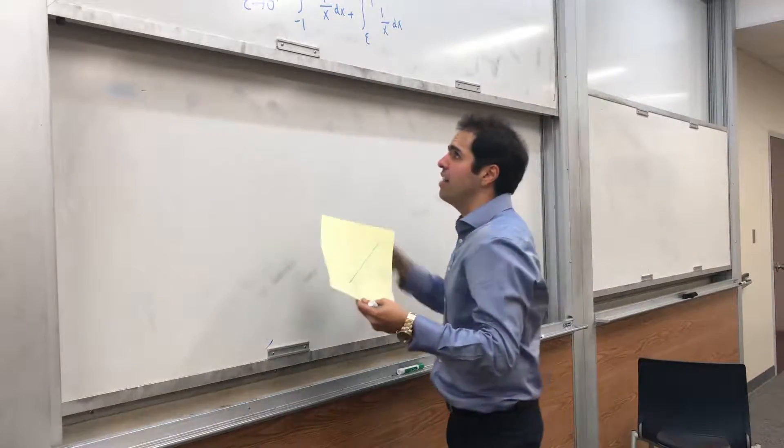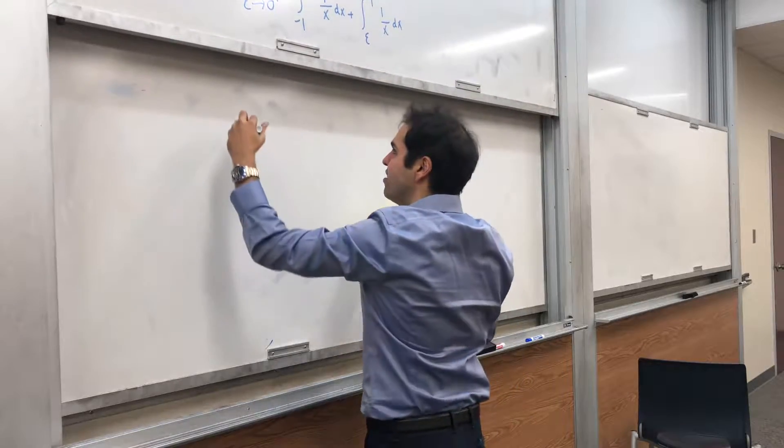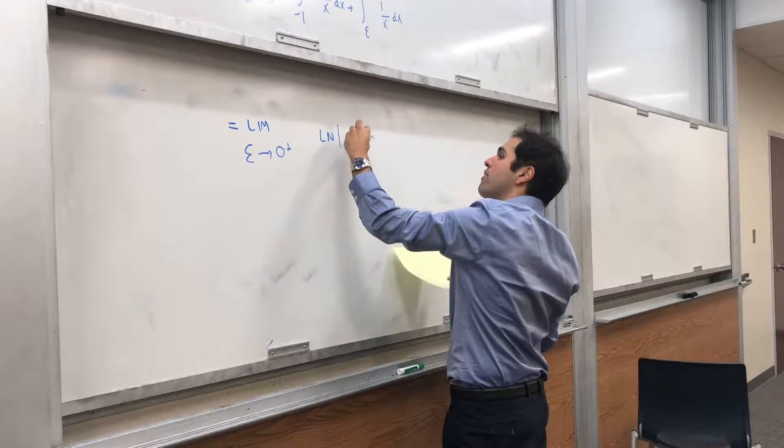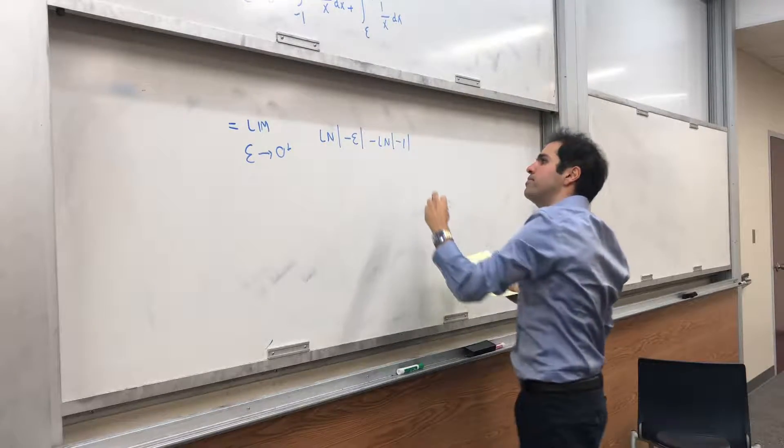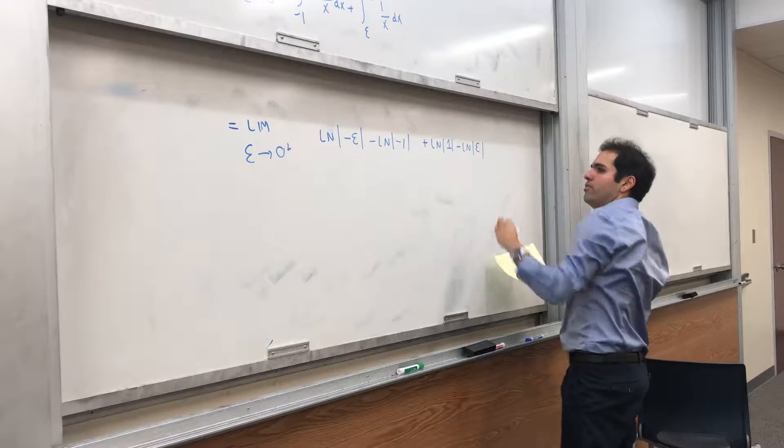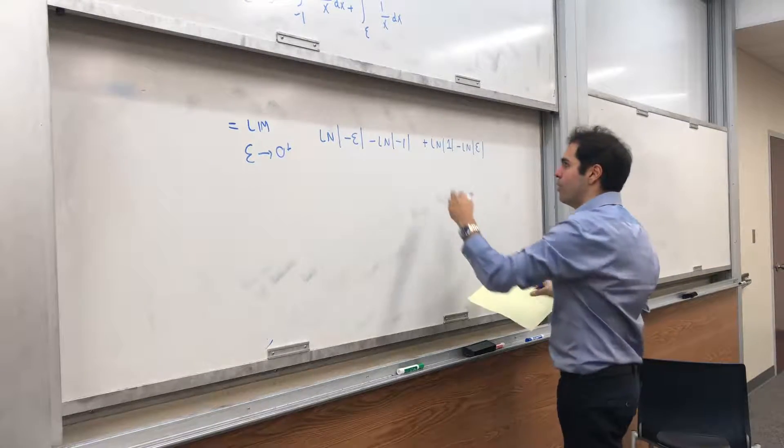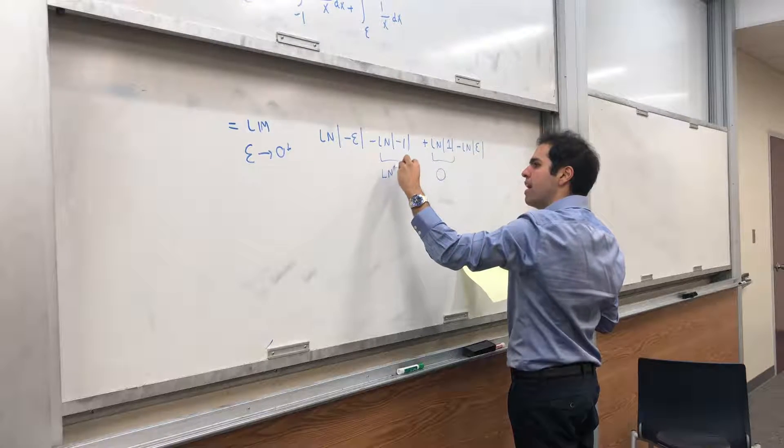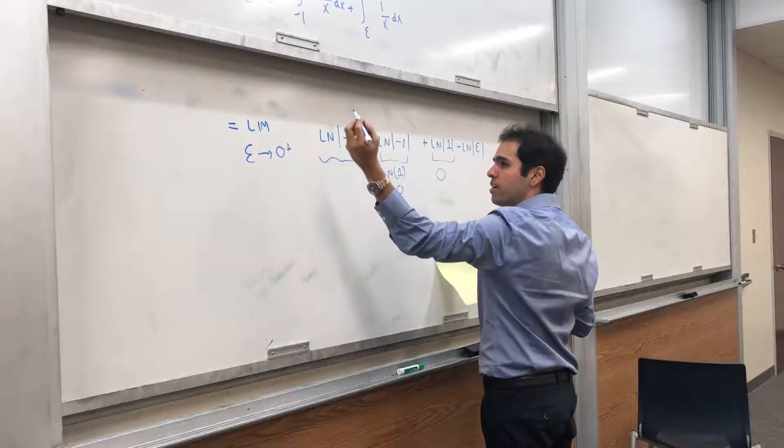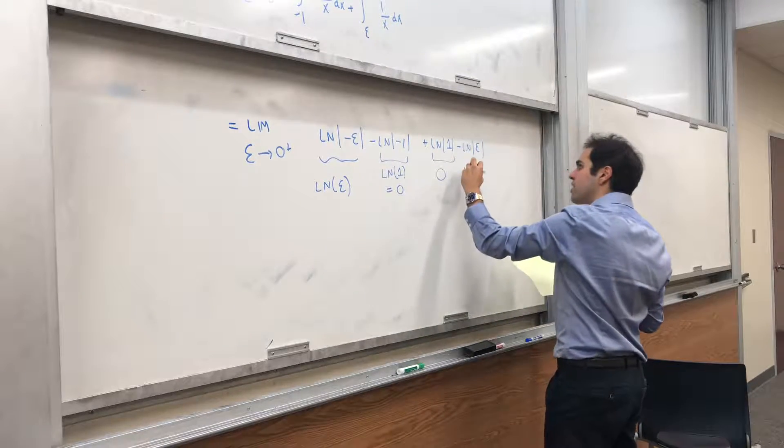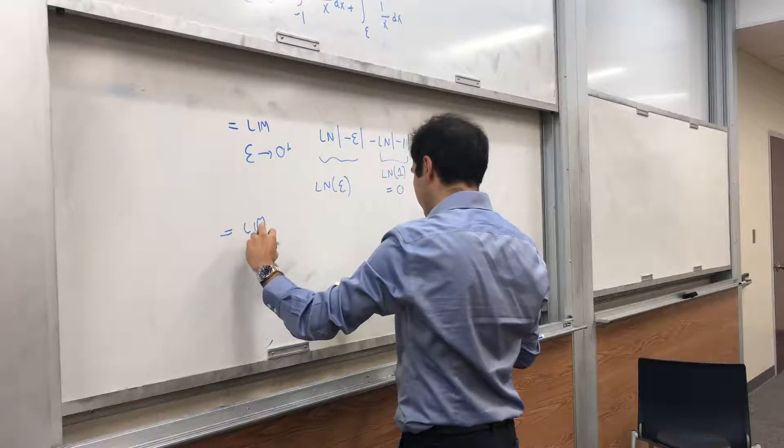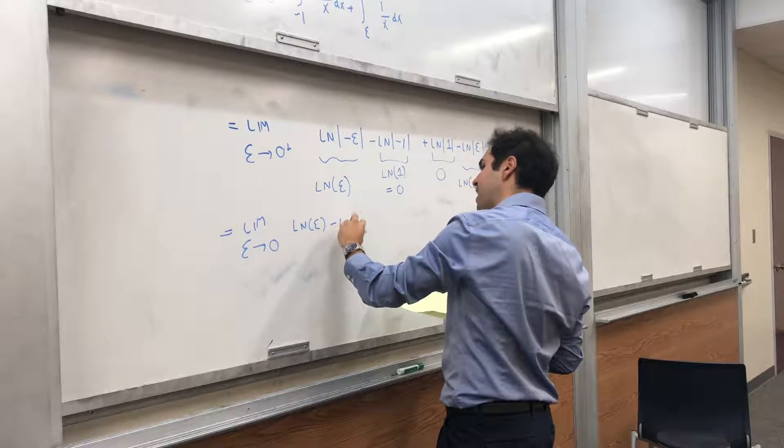So let's see. Now let's evaluate this. So this is limit epsilon goes to 0 plus of, again, you take ln of absolute value of minus epsilon, minus ln of absolute value of minus 1, plus ln of absolute value of 1, minus ln of absolute value of epsilon. Well, ln of absolute value of minus 1, which is also 0. And epsilon is positive, so this becomes ln of epsilon, and this is ln of epsilon.